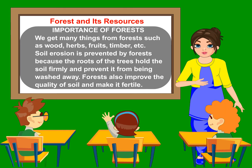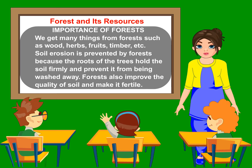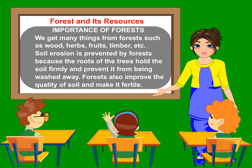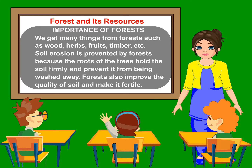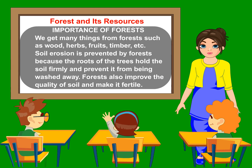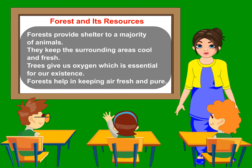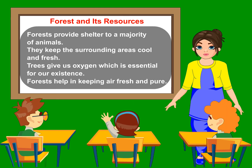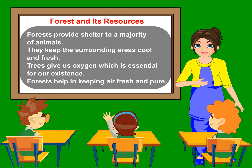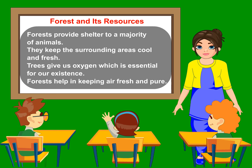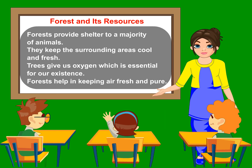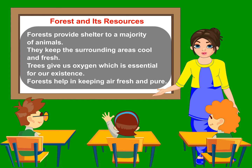Soil erosion is prevented by forest because the roots of the trees hold the soil firmly and prevent it from being washed away. Forests also improve the quality of soil and make it fertile. Forests provide shelter to a majority of animals. They keep the surrounding areas cool and fresh. Trees give us oxygen which is essential for our existence. Forests help in keeping air fresh and pure.